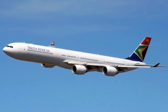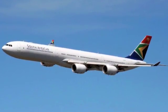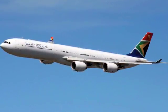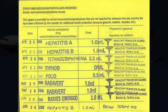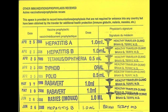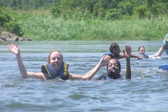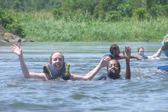Before you get on that plane, check with the Centers for Disease Control or the World Health Organization to find out what's present in the location you're traveling to. Make sure you're up to date with current immunizations and have all precautions available to you. And if you really don't want to get schistosomiasis — stay out of the water.